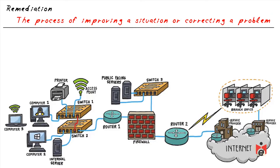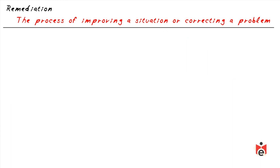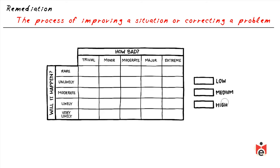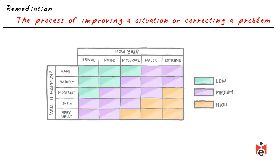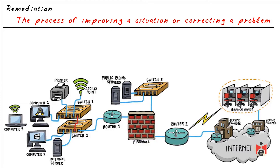If a report identifies 5,000 vulnerabilities, which do we deal with first? The answer is twofold: definitely address anything critical, considering both how severe the vulnerability is and what type of system has it. We might also see a connection from a server to a foreign IP address with hundreds of megabytes sent — that would be a very high priority to fix right away.